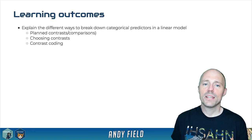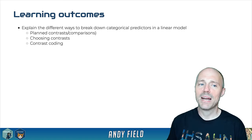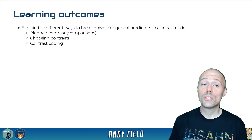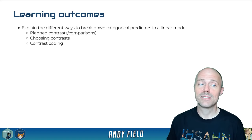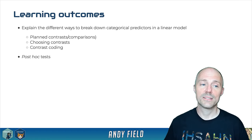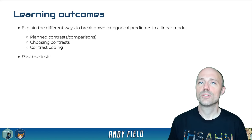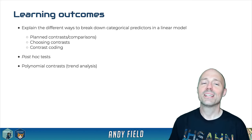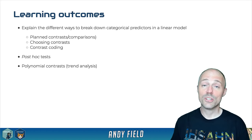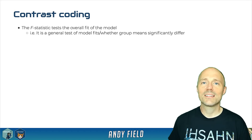By the end of this session, we're going to look at what planned contrasts or planned comparisons are and how we code them — how we use different coding schemes to make different comparisons between groups when using categorical predictors. We'll also briefly look at post-hoc tests, polynomial contrasts for examining trends in means, and for the bulk of today we'll look at contrast coding.